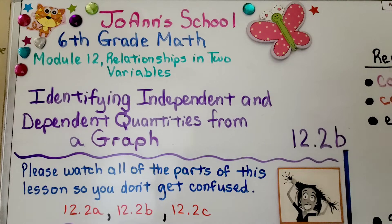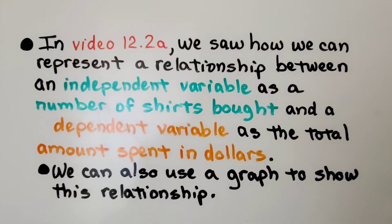Lesson 12.2b, Identifying Independent and Dependent Quantities from a Graph. In video 12.2a, the previous video, we saw how we can represent a relationship between an independent variable as a number of shirts bought and a dependent variable as the total amount spent in dollars. We can also use a graph to show this relationship.